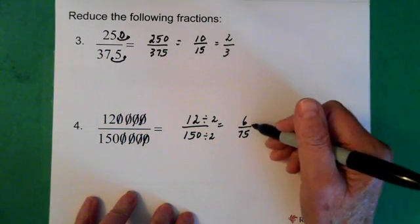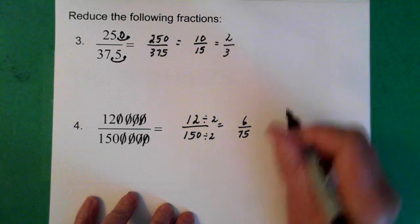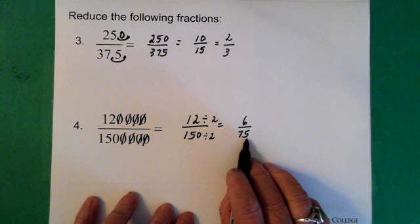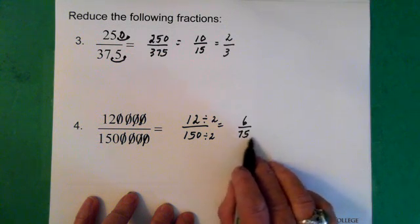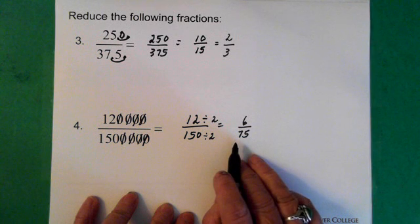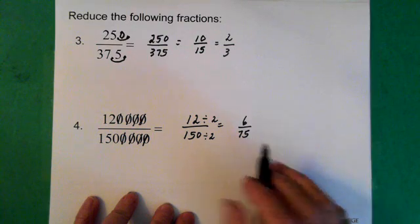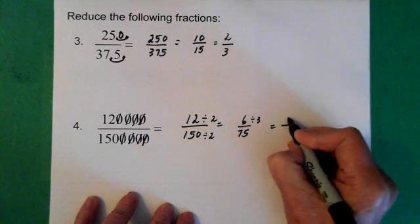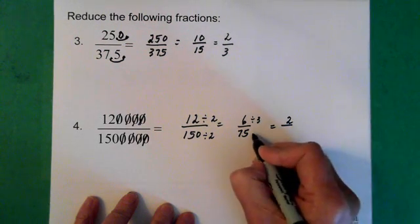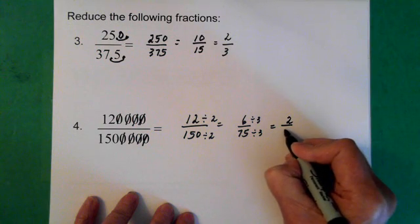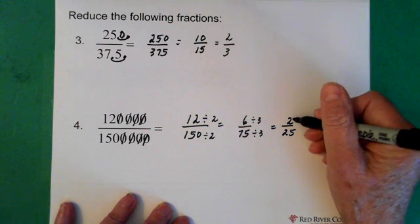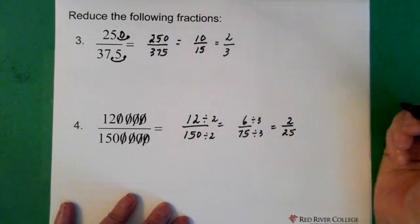Looking at these numbers — six is divisible by three. What about seventy-five? Seven plus five is twelve, so it has to be divisible by three — think money, seventy-five cents divided by three is three quarters. So we divide six by three and get two, divide seventy-five by three and get twenty-five. That's as far as you can go — two is only divisible by two and twenty-five is not divisible by two.